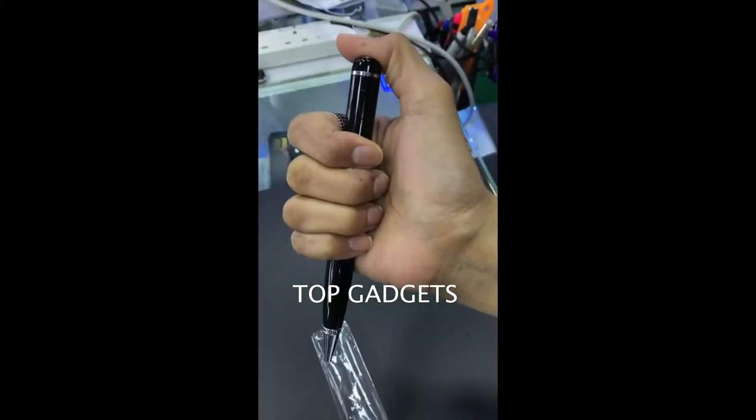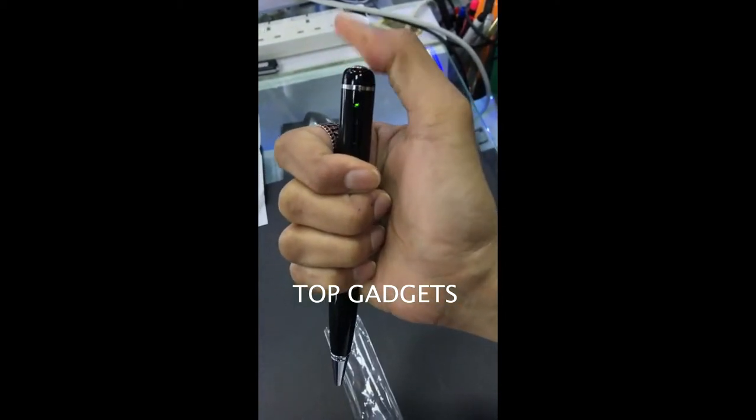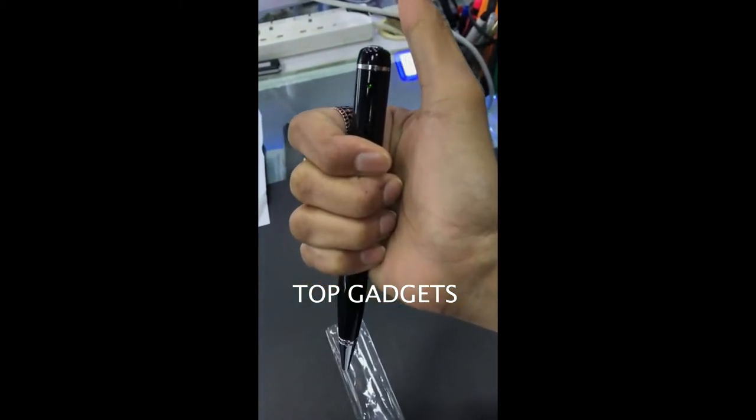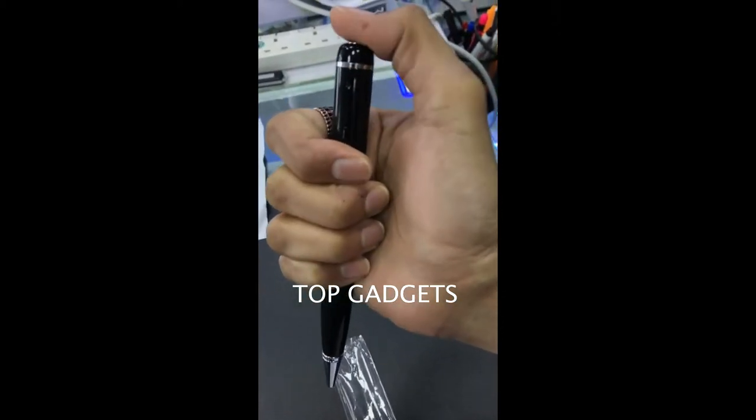To switch on the camera, press and hold the button. You will see the light. To take a photo, press one time.